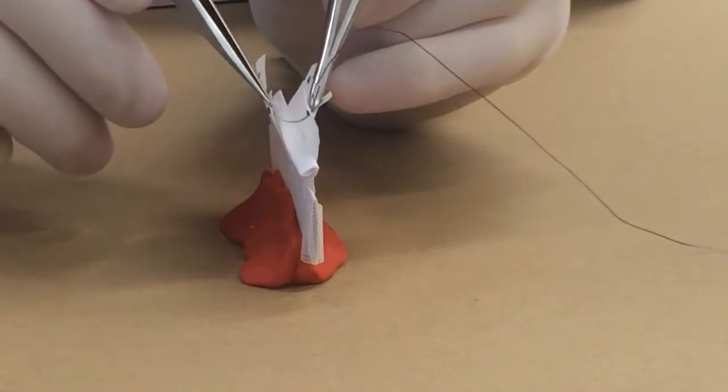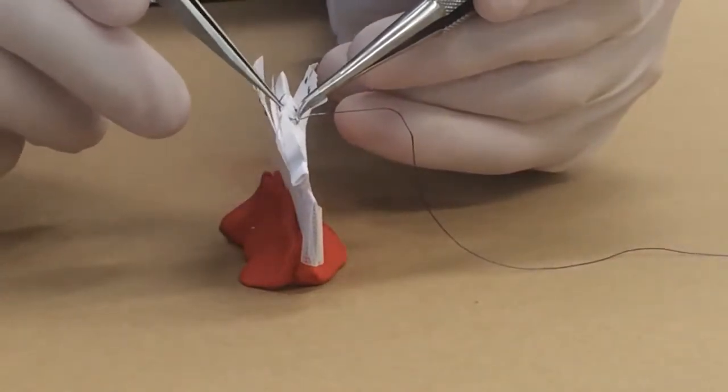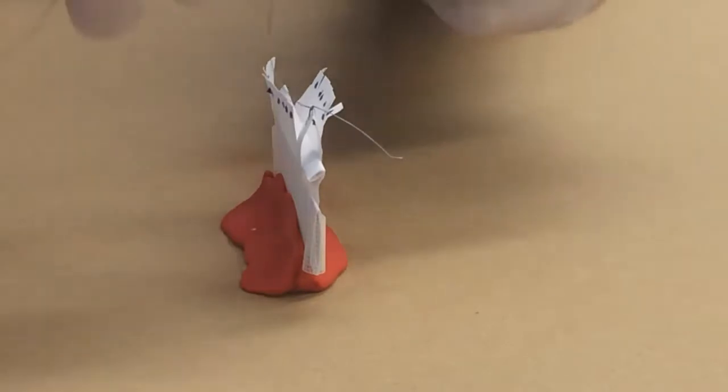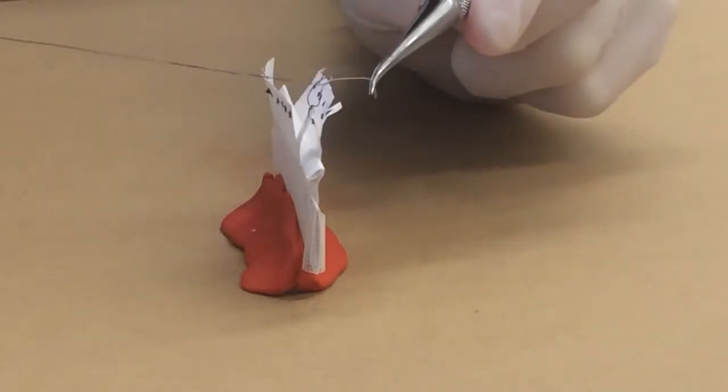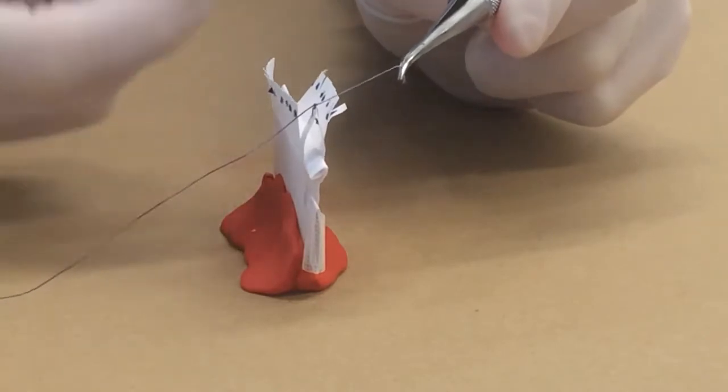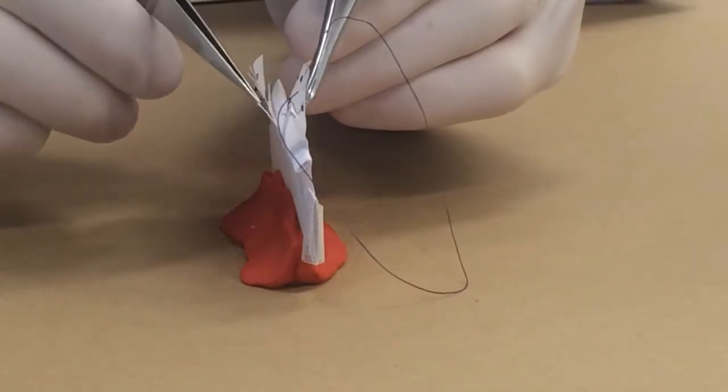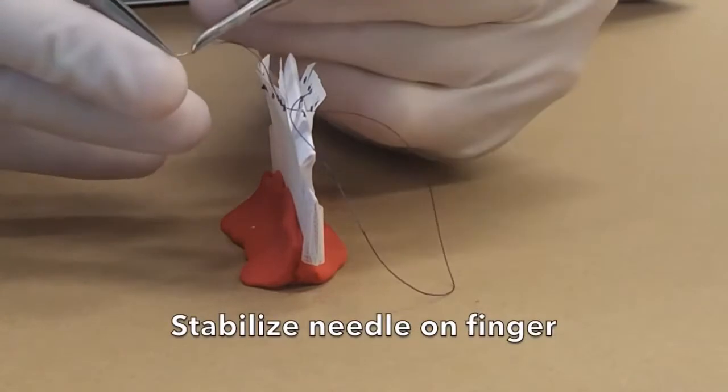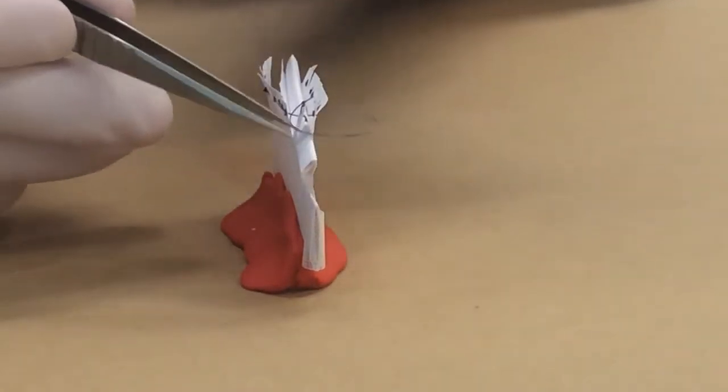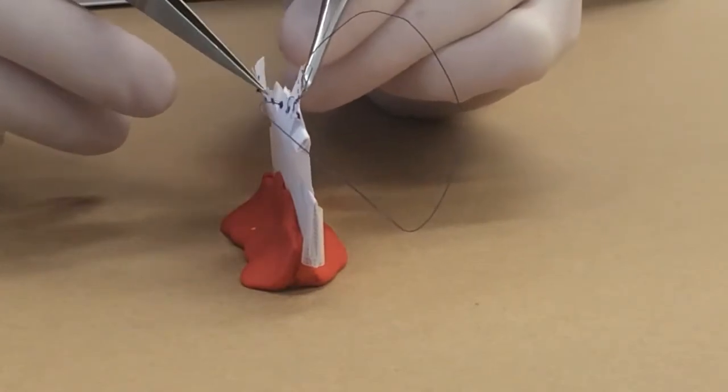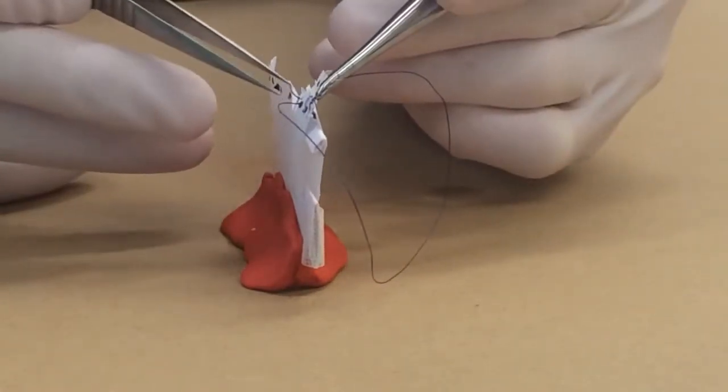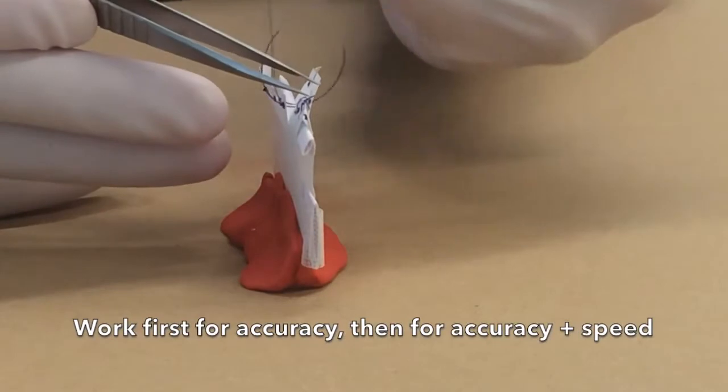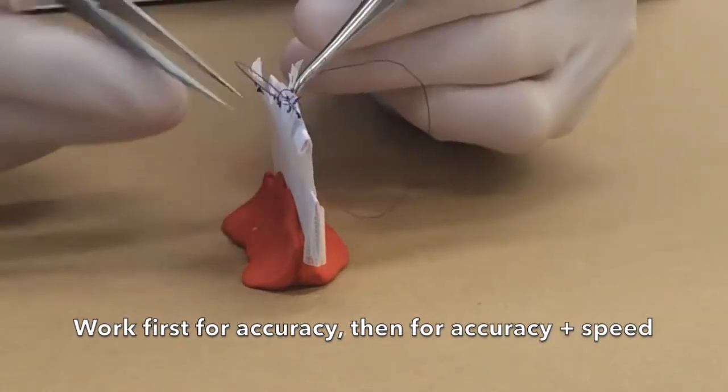The objective is to pass the needle through the prescribed target holes in the paper model using the forceps to move the edges of the paper to help coordinate proper needle placement. Stabilize the needle on a finger during needle reloading. It is important to work first for accuracy and then for accuracy plus speed.